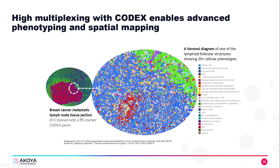All this high multiplexing with Codex enables advanced phenotyping and spatial mapping, so we can understand where these complex phenotypes are inside the tissue. Here, there's a Venn diagram showing both the color and letter annotations of the different cell types inside the tissue. For this follicular structure, there were over 20 cell types.